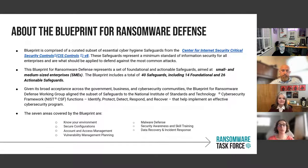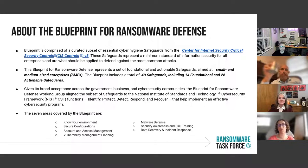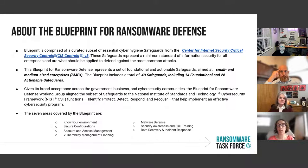For those who may not know what the controls are, they're a set of prioritized best practice recommendations that defend against the most common attacks. What I like most about the blueprint is it provides a path for organizations to follow, setting them up for success and not being overwhelmed. The blueprint consists of 40 safeguards aimed at small and medium-sized enterprises, broken down into 14 foundational and 26 actionable safeguards, selected for both ease of implementation and effectiveness in defending against ransomware attacks.